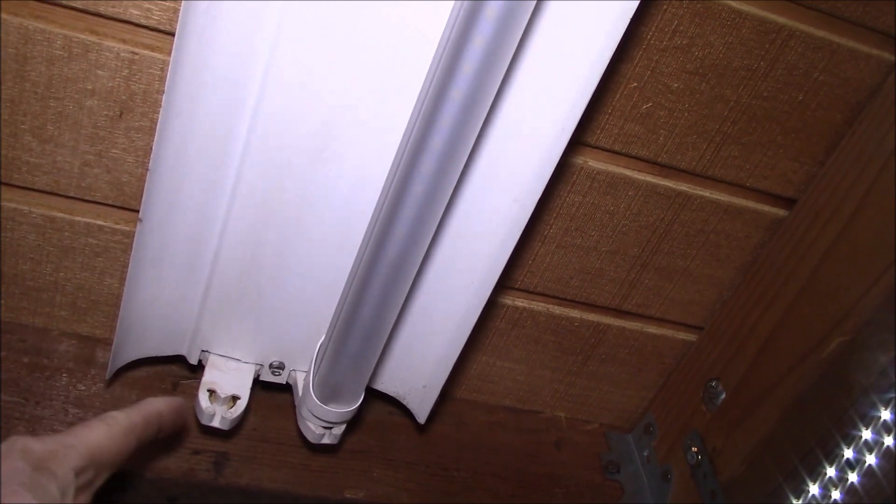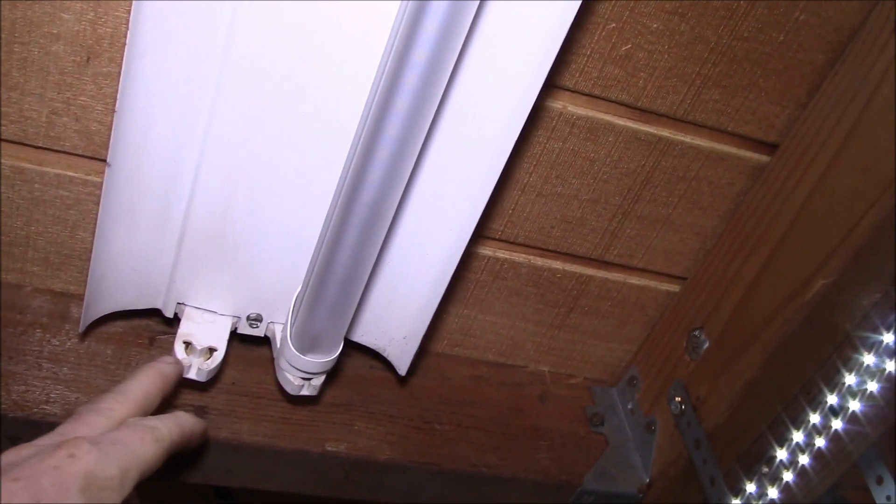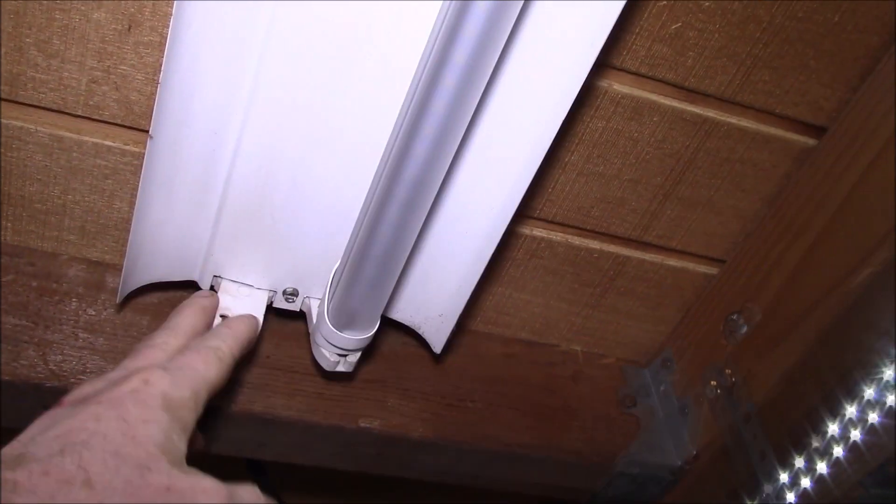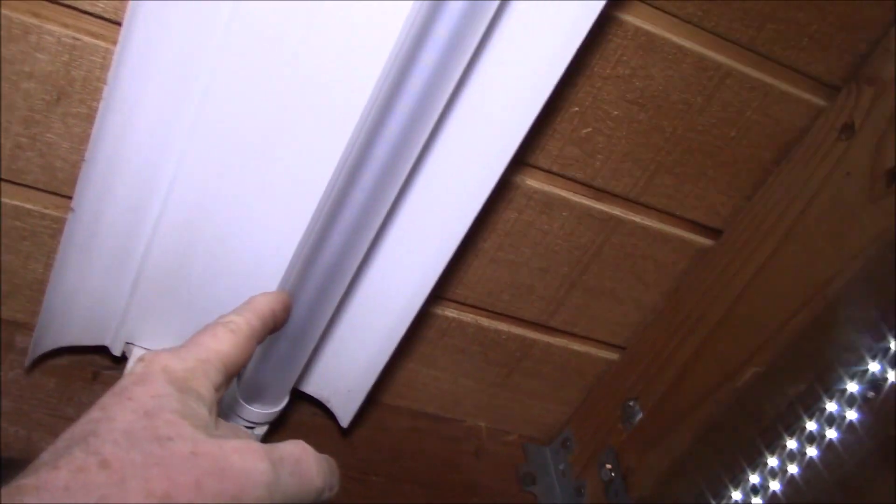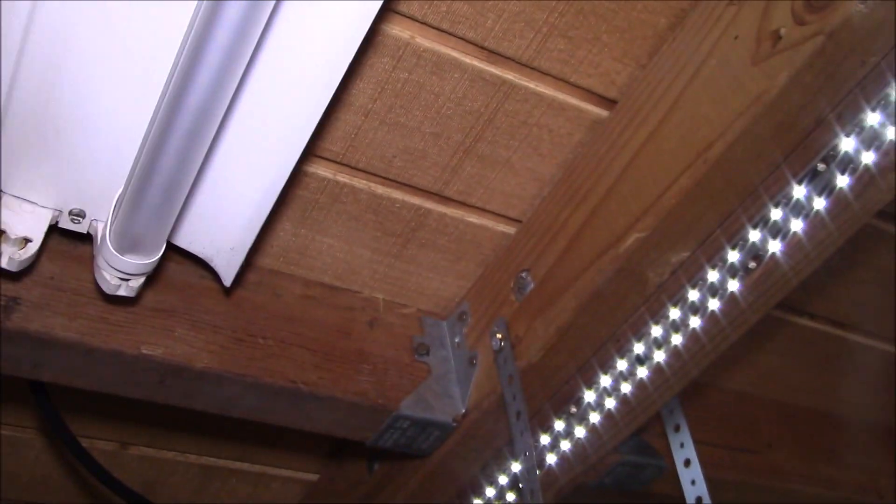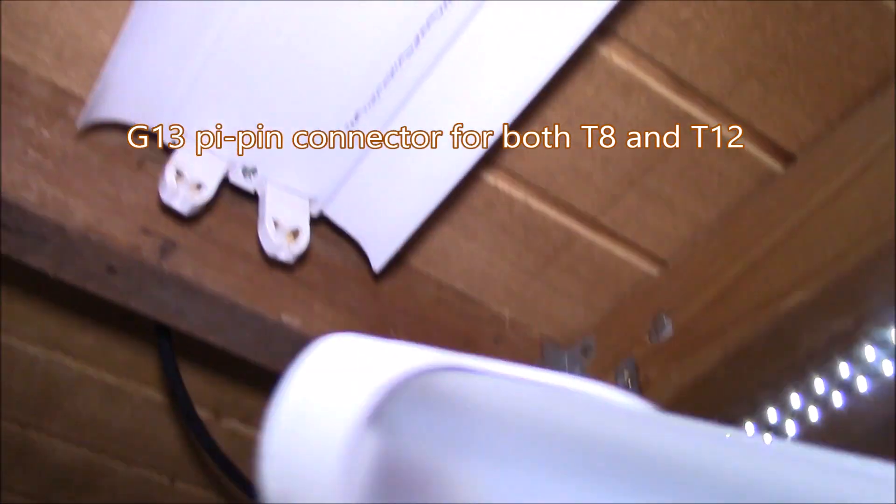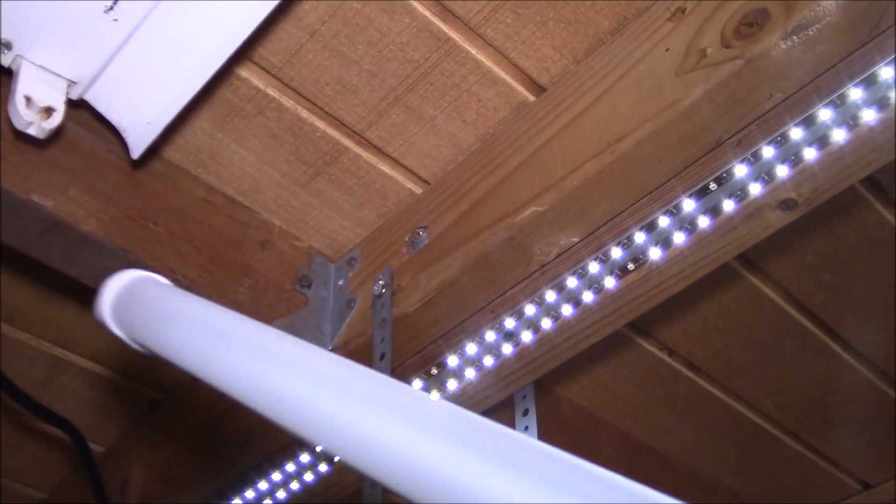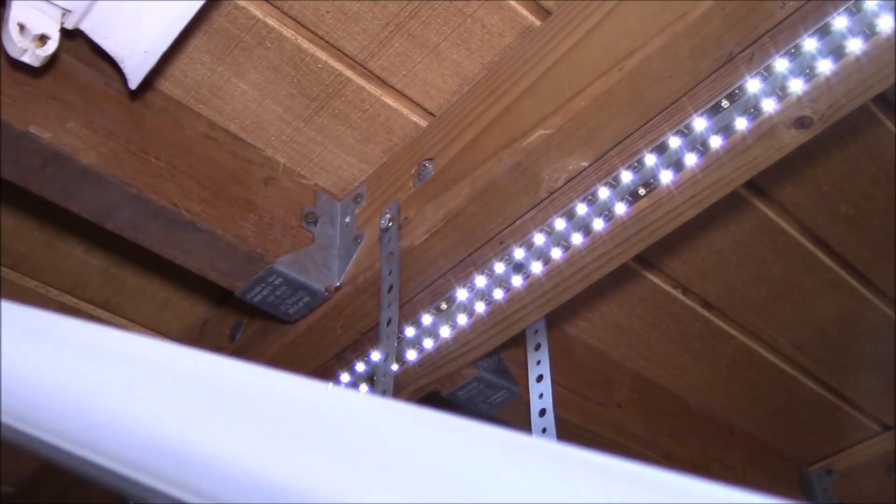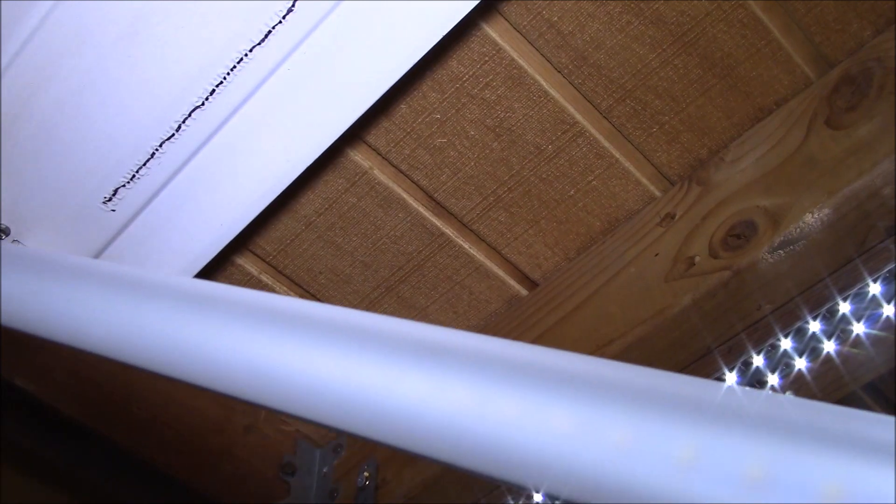One of the questions I had was did I do anything to these T12 tombstones and the answer is no. That's the original tombstone that came with the old T12 lights and these are T8 tubes and they just fit right in. It's the same bi-pin spacing that you get on the T12 and the T8s. You can see how the frosted glass coating is still on there. I have ten of these tubes and I haven't had any failures over the last five years. They've been running just fine.